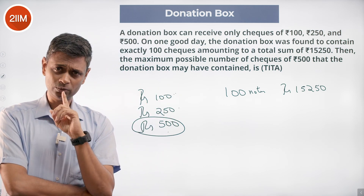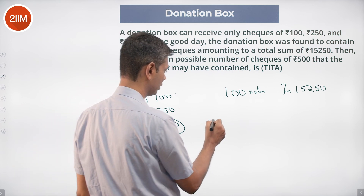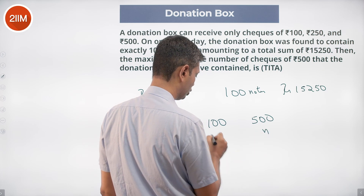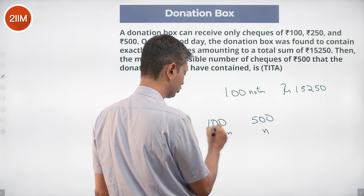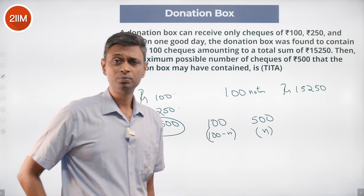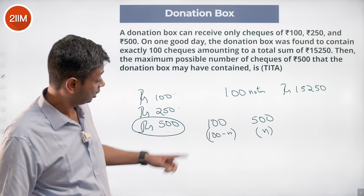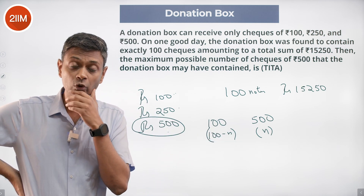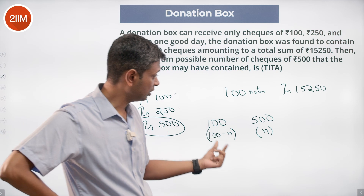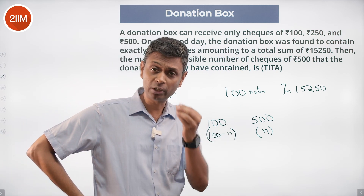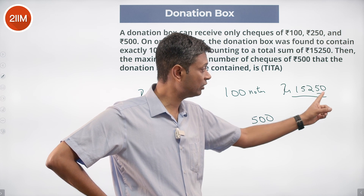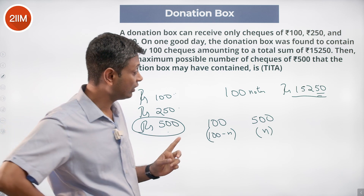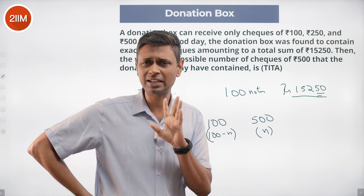Suppose we solve for only 100 and 500 rupee notes: let n be the number of 500-rupee notes, then (100 minus n) are 100-rupee notes. If we solve this, we should get our answer. However, the problem is that if we only use 100 and 500 rupee notes, the total amount will be a multiple of 100. But our total is 15,250, which has a pesky 50 at the end.